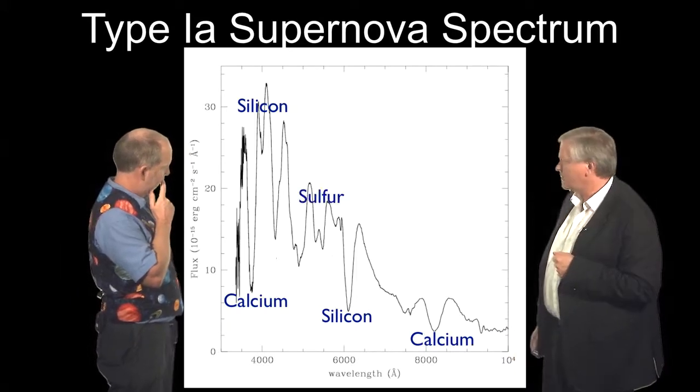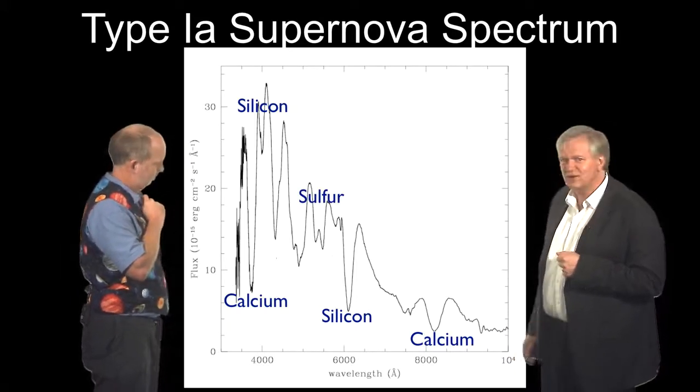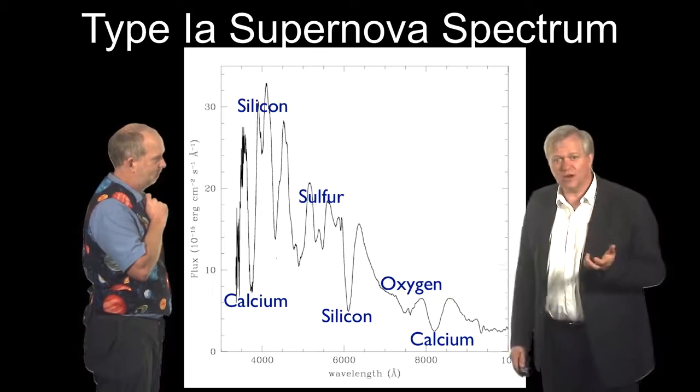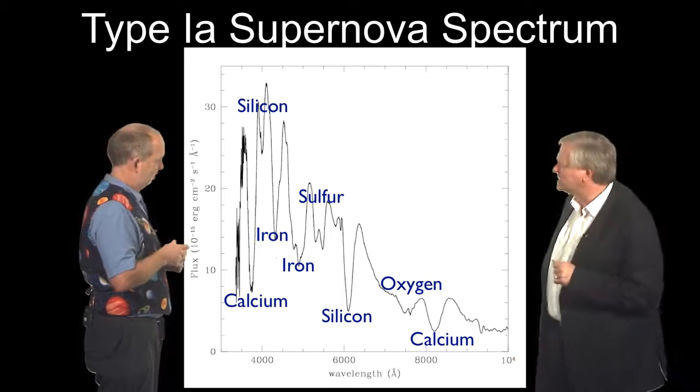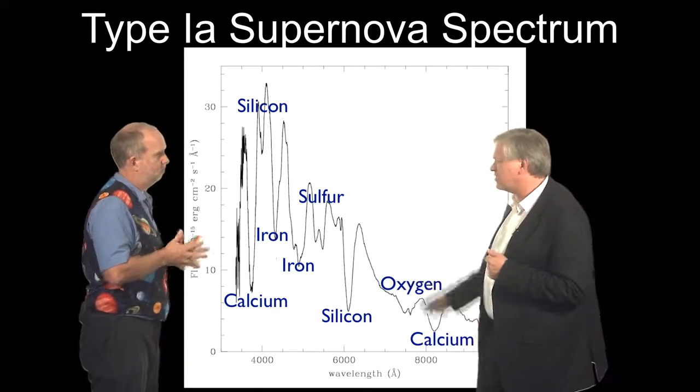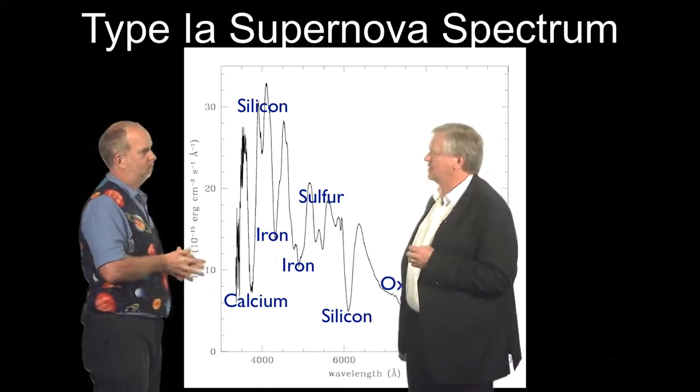What else do we have? We've got sulfur, that's lighter than iron. We've got oxygen. So is there any iron at all, you ask? Actually there is a little bit of iron in this, but it's predominantly made of things other than iron.